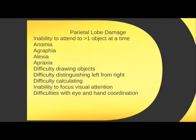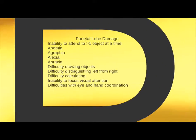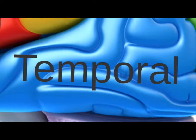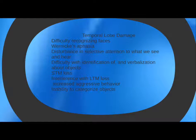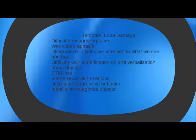Most specifically, a person with parietal lobe damage will have an inability to attend to more than one object at a time — this is a common symptom you'll see. Moving on to the temporal lobe, this is additionally where we process information, and more importantly where we process and interact with the outside or external environment. Deficits include difficulty recognizing faces and difficulty understanding audible communication, which results in Wernicke's aphasia.